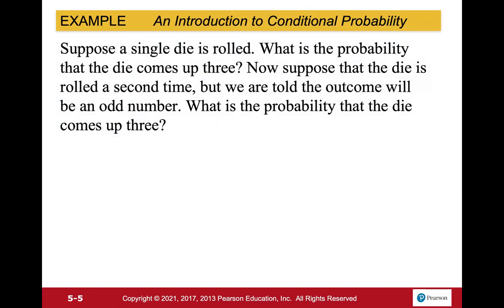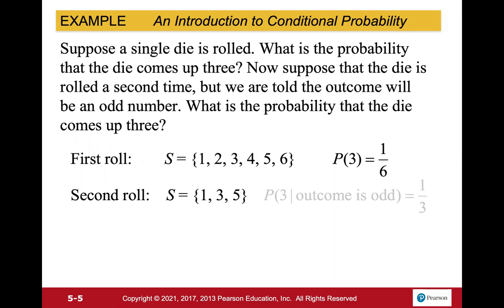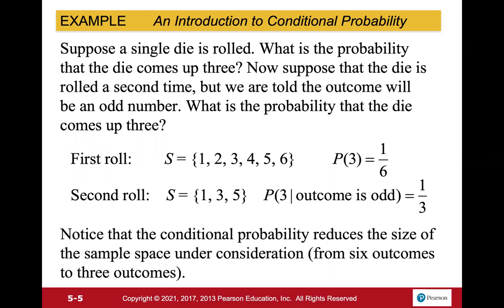Suppose a single die is rolled — what is the probability that it comes up 3? Now suppose the die is rolled again, but we're told the outcome will be an odd number. The first roll has probability 1 out of 6 for a 3. But for the second roll, since we know it's odd, the sample space is just 1, 3, or 5 — so the probability becomes 1 out of 3. Notice that the conditional probability reduces the sample space from 6 outcomes to 3 outcomes.